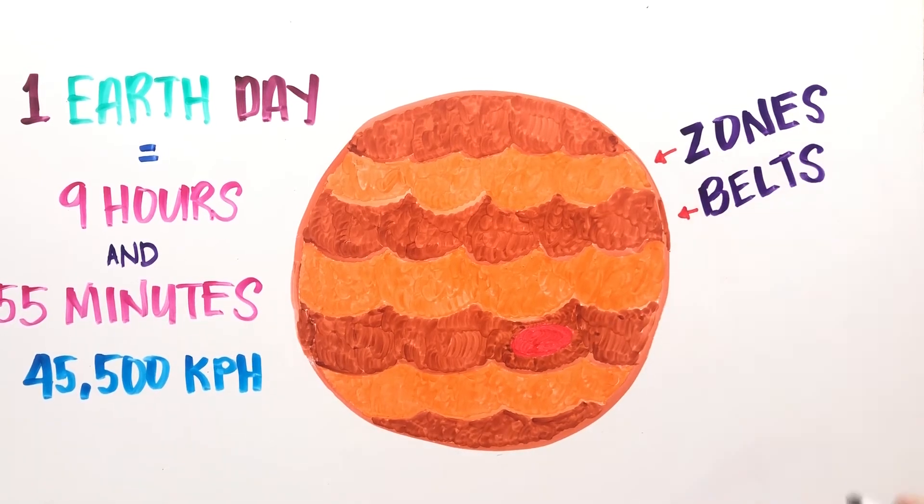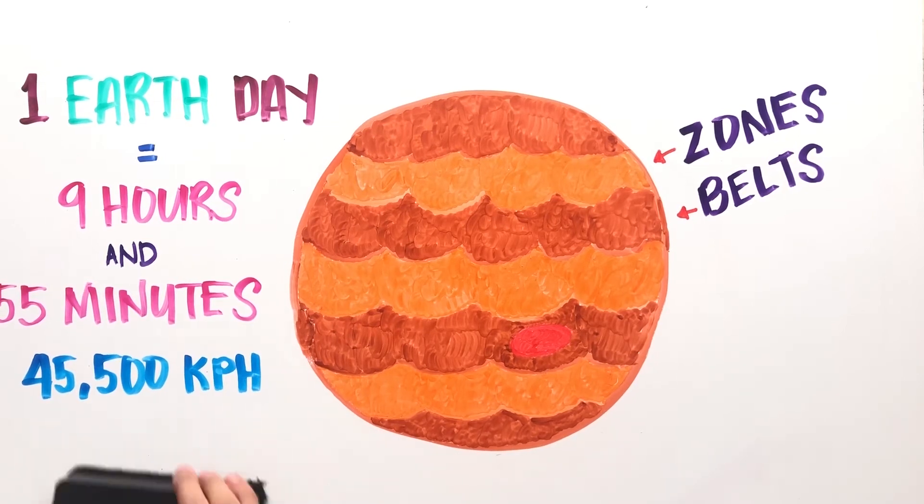The darker bands, called belts, are lower-altitude areas of lower pressure and high temperatures. These multicolored layers cover the entire globe and move either with or against the planet's spin.